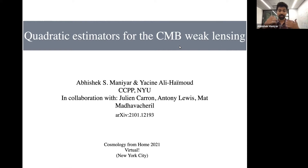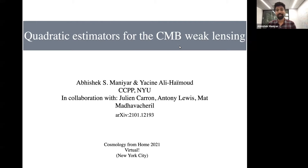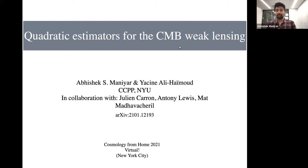I would like to start with some background. I did participate in the Cosmology from Home last year, 2020, but I was just a spectator. I was not sure how a virtual conference would proceed, but all the organizers and participants did a fantastic job. I really enjoyed it and that's why this time I decided to participate more actively. Today I'll be talking about a project I did during these COVID times: quadratic estimators of CMB weak lensing. This is my first venture into CMB weak lensing theory, carried out in collaboration with Yasin Ali Haimuth at New York University, as well as Gillian Caron, Anthony Levis, and Matt Madarsheri.